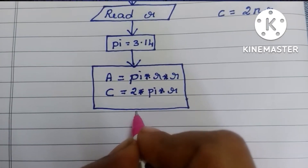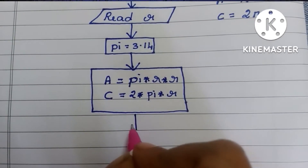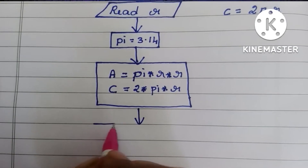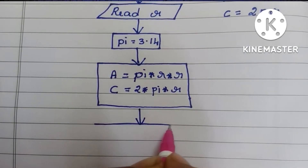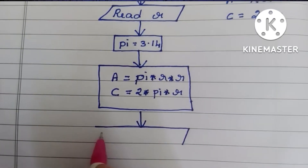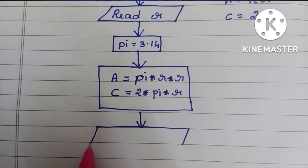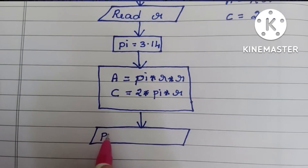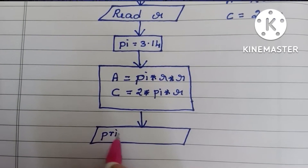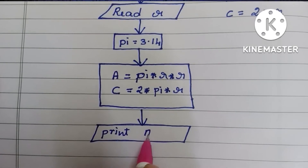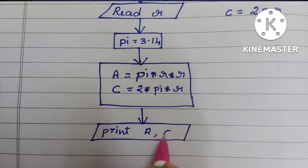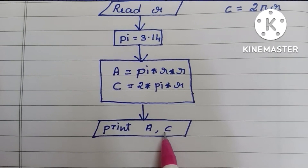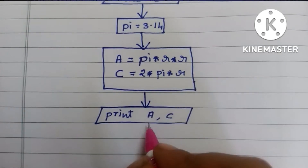Next we have to display the output. Output is always represented using a parallelogram shape. Inside it we write: print A, C — that is, the area and circumference of the circle.